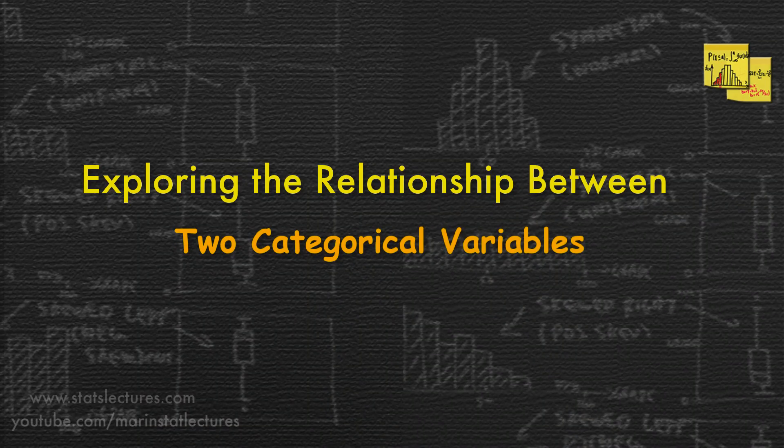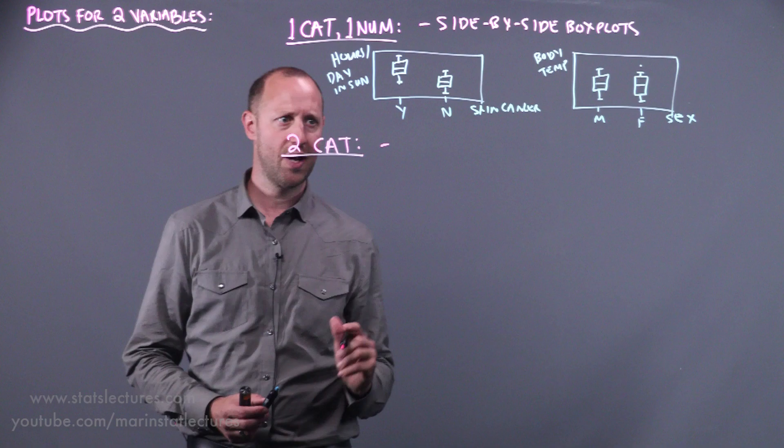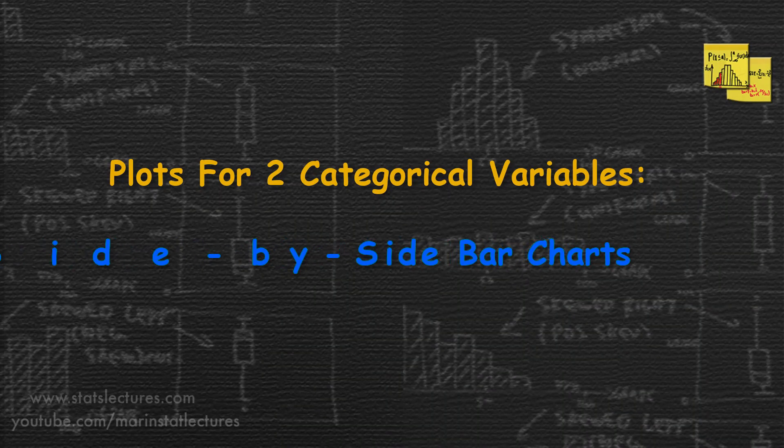So now let's think about plots that we can make for two categorical variables. Here there's a number of different plots that exist, each with good and bad qualities to them. So the first one we'll talk about is side-by-side bar charts.